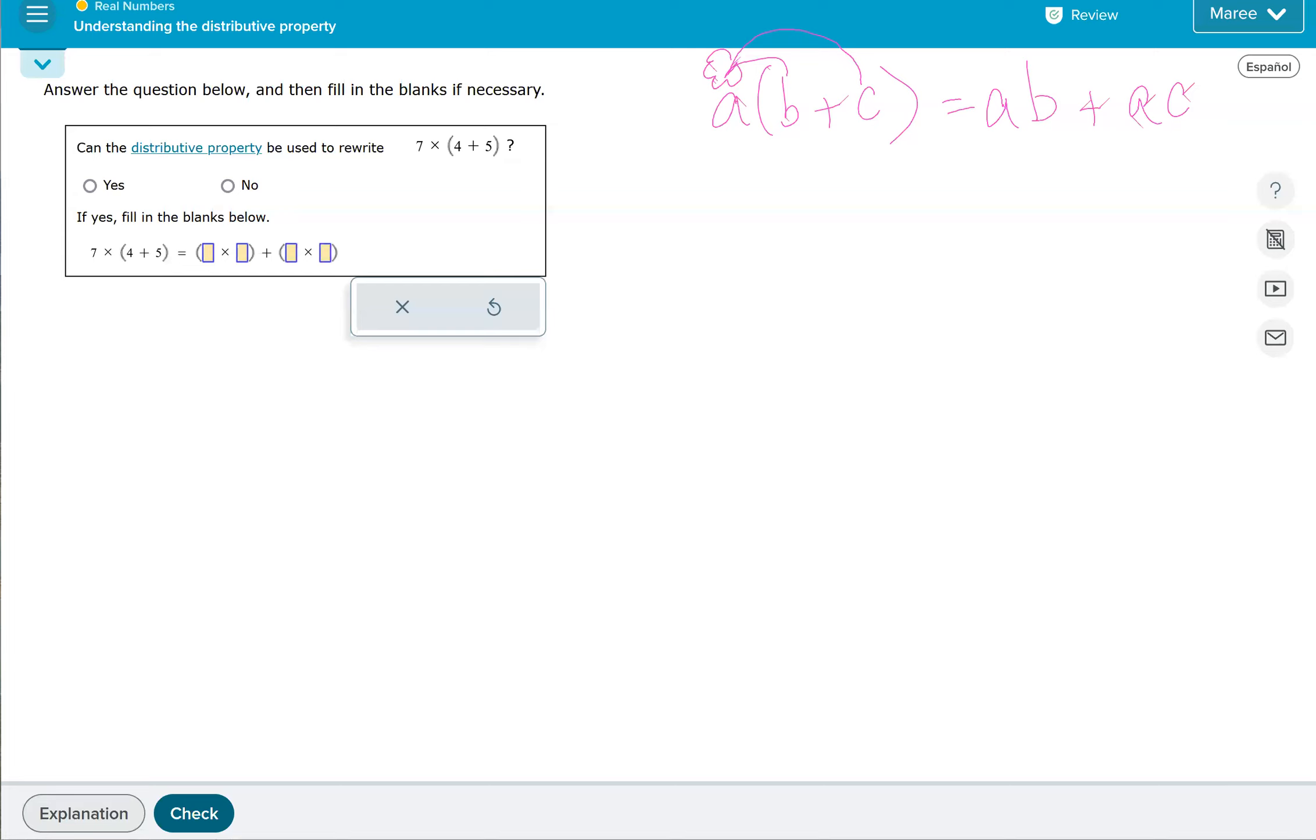This problem says: can the distributive property be used to write 7 times (4 + 5)? Well, if our 7 is a, our 4 is b, and our 5 is c, then yeah, we can. We have the times, we have the plus sign. So yeah, that'll work.